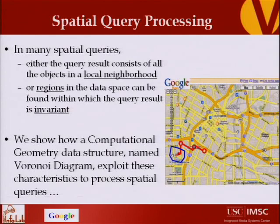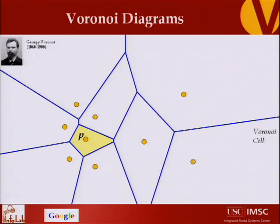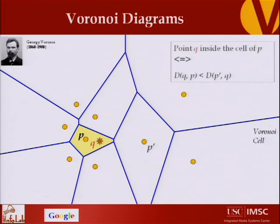Now let's define the Voronoi diagram. Given a set of input points — like these orange points — a Voronoi diagram partitions the space into N regions. Each region corresponds to one point and includes all the points in the space whose closest orange point is that point. Any point Q within the Voronoi cell of P has P as its closest neighbor. The distance between Q and P is less than the distance between Q and any other point P prime.